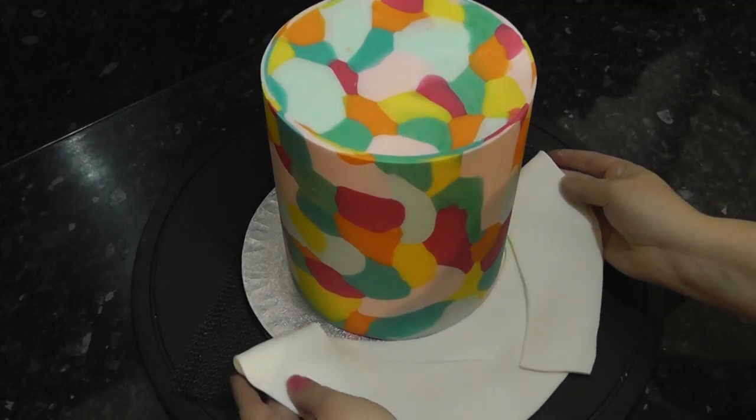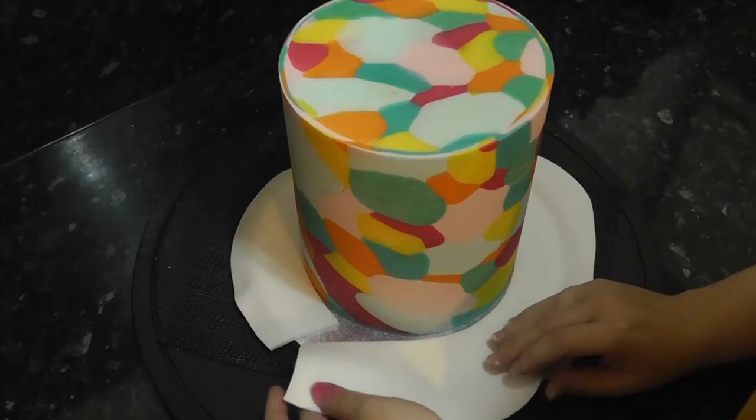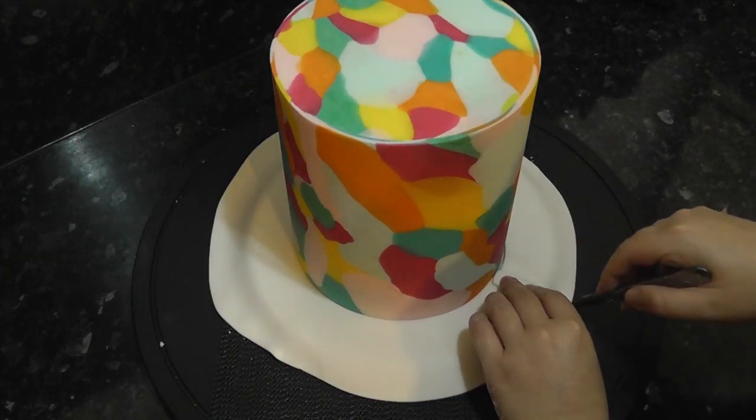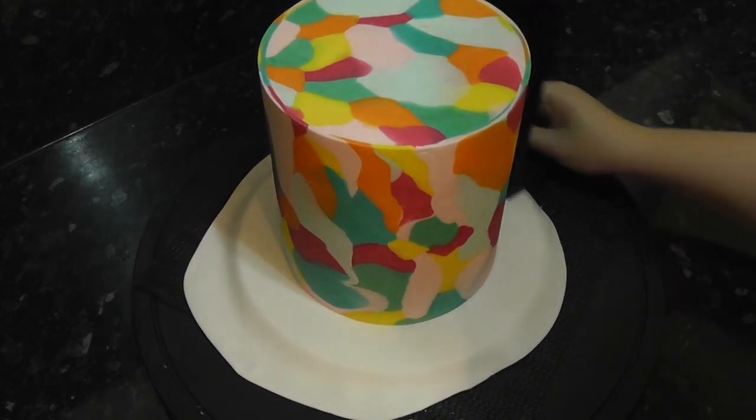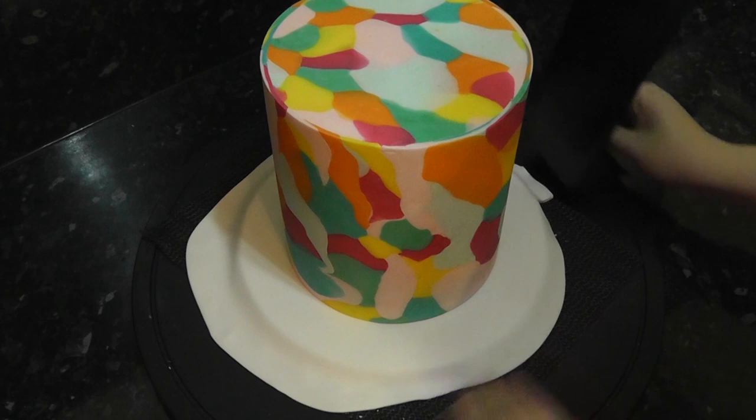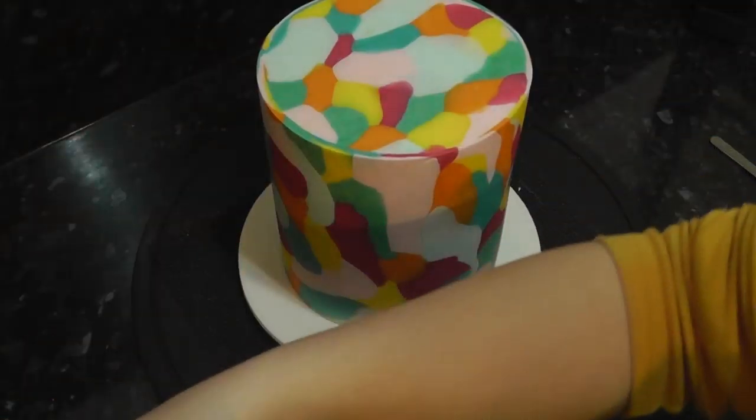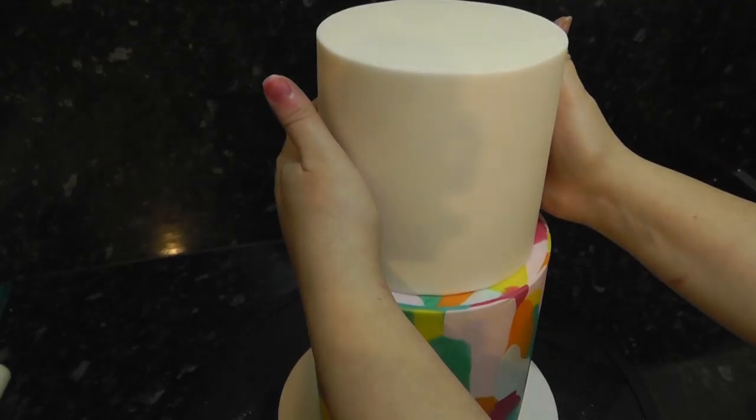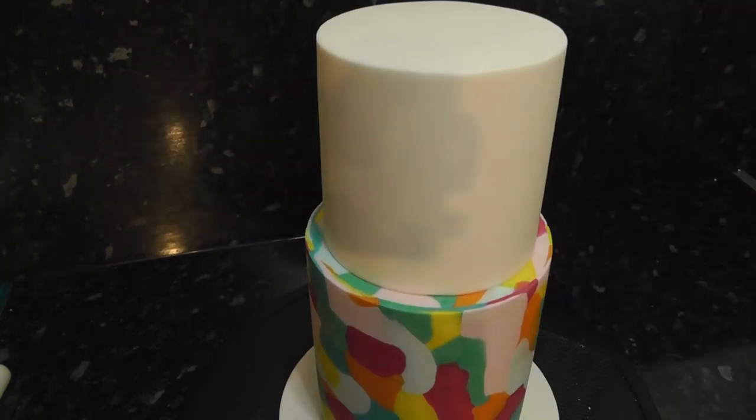To make it pop, we are teaming it with white. Cover the board using the toilet seat method. The full steps for this are also linked below along with all the tools and materials I use. Using some melted chocolate, attach a five inch white cake to the top. If yours is a real cake, just make sure to dowel it to support the weight.